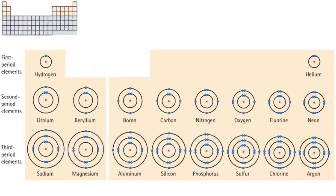Here's a cheat sheet for later — when I ask you to draw Bohr models, you'll be able to use this. For our class: the first shell only holds two, and after that the shells can hold up to eight apiece. This will make more sense later.